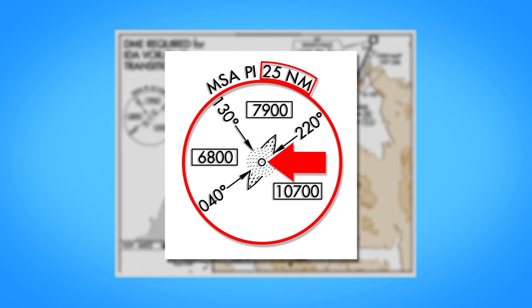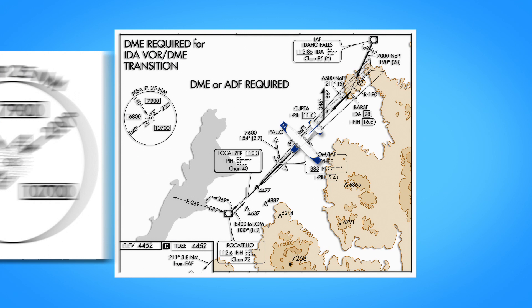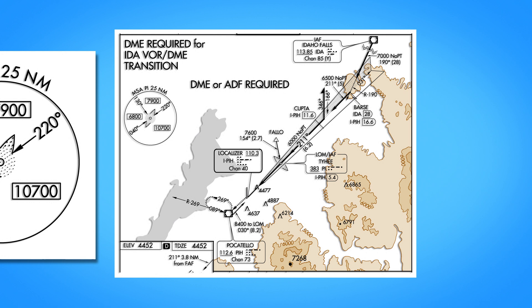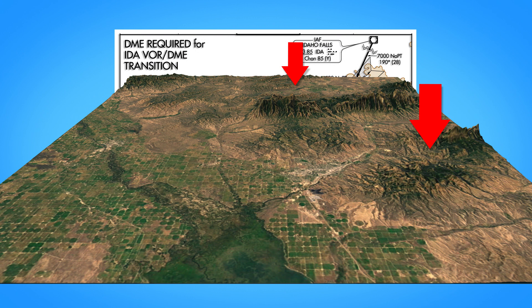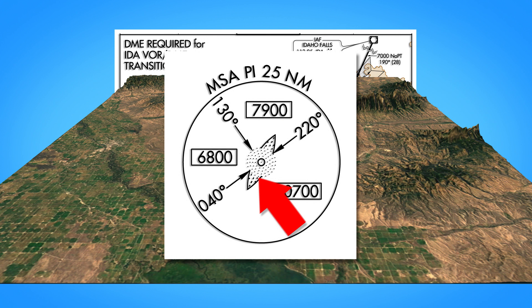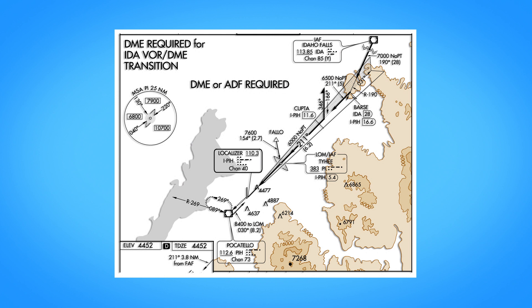The last important item is the minimum safe altitude ring, labeled MSA — a 25-nautical-mile ring based on a nav aid or fix that gives a safe altitude to maintain obstacle clearance. The MSA should only be used in emergencies when you have departed the designated approach plan, since it only gives 1,000 feet of obstacle clearance. The ring can be continuous or split into sectors. For Pocatello, the mountains to the east require flying no lower than 10,700 feet MSL in the sector from 220 degrees down to 040 degrees, while to the west and north the MSA reflects lower elevations of 6,800 and 7,900 feet respectively.